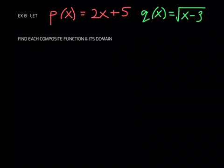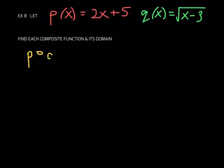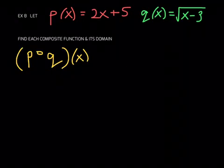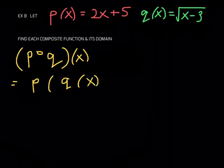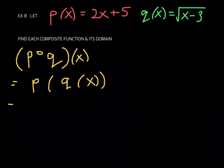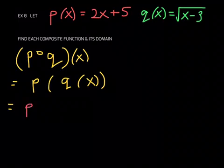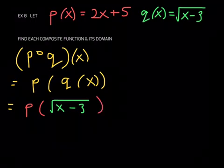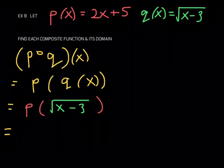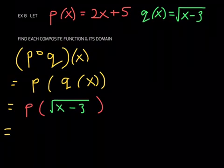The first composite function they're asking us to find is p composed with q at x. By definition, p composed with q at x is equal to p of q of x. So p of... now q of x is the square root function, the square root of x minus 3.